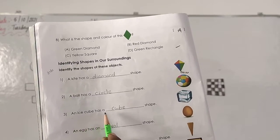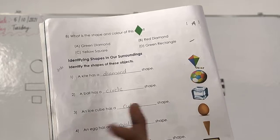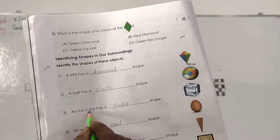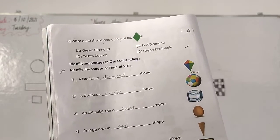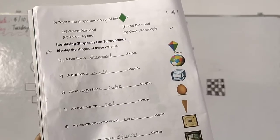Then next step. An ice cube has a dash shape. Ice cube. See here only. I have all white. Ice cube. Ice cube has a cube shape. Write down cube.